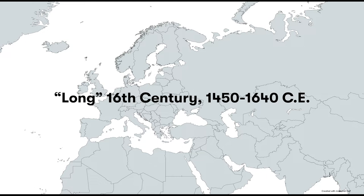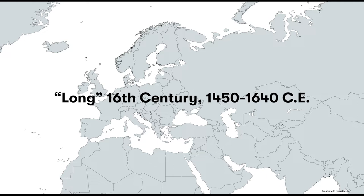A really good example of world systems analysis in practice is the Industrial Revolution. Wallerstein suggests the world system developed in the long 16th century, roughly 1450 to 1640 CE, during which Europe was able to gain control over the world economy and eventually centralize production by being the first to industrialize. England became the first core country, and the surrounding countries which fueled production in England became peripheral and semi-peripheral.